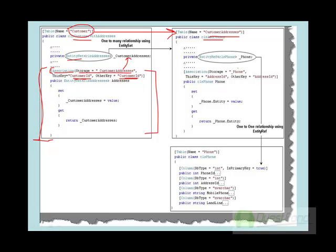We also stated in the ER diagram that addresses and phone have a one-to-one relationship, and that is defined using EntityRef. We created the object of CLS Phone inside the customer addresses class and defined it using EntityRef. Again we used the association attribute to define the linkage between CLS Address and CLS Phone using the address ID, and the storage location is the phone variable.